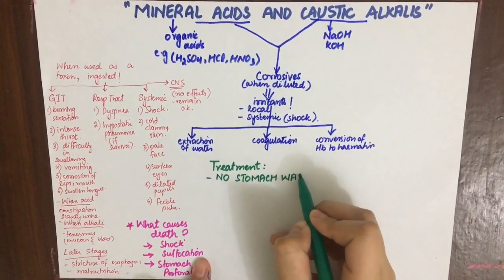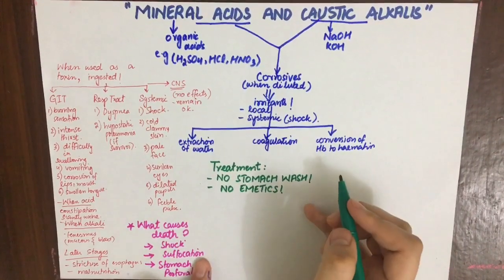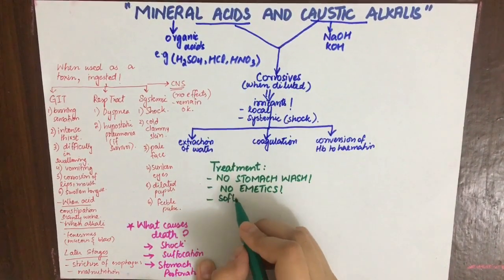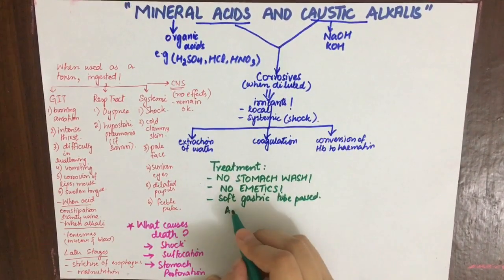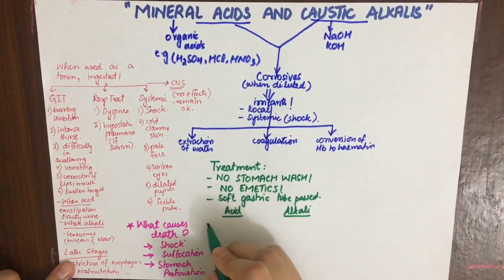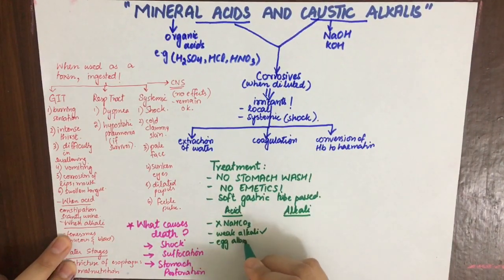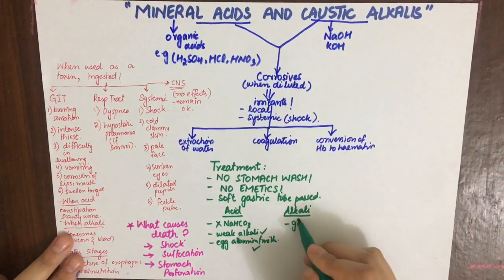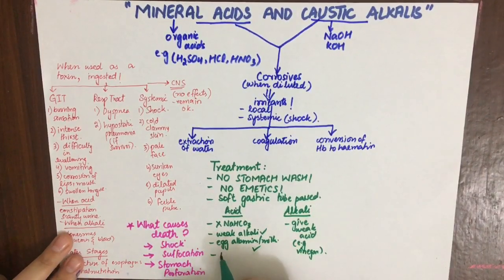Treatment includes two major contraindications: no stomach wash and no emetics — these are absolutely contraindicated in corrosive poisoning. However, a soft gastric tube known as a Levine tube is passed for aspiration to prevent serious caustic burns. When an acid is used, alkaline carbonates such as sodium bicarbonate should not be used; weak alkalis, egg albumin, or milk may be used instead.